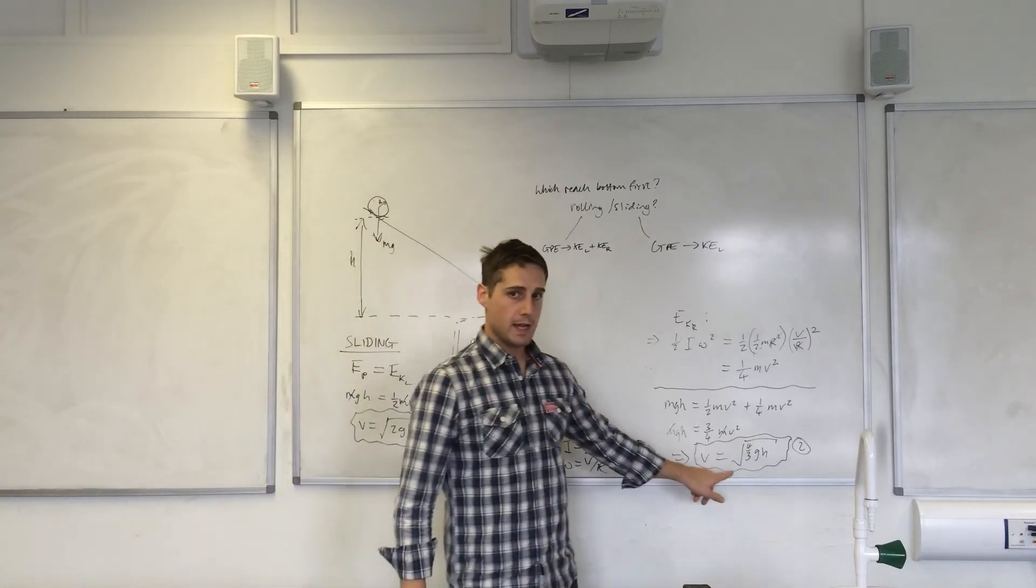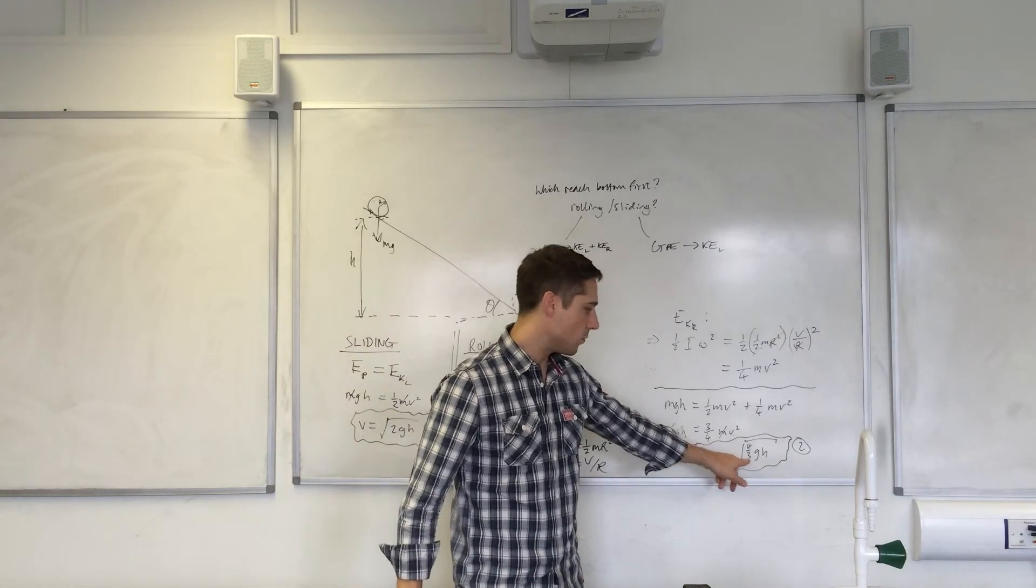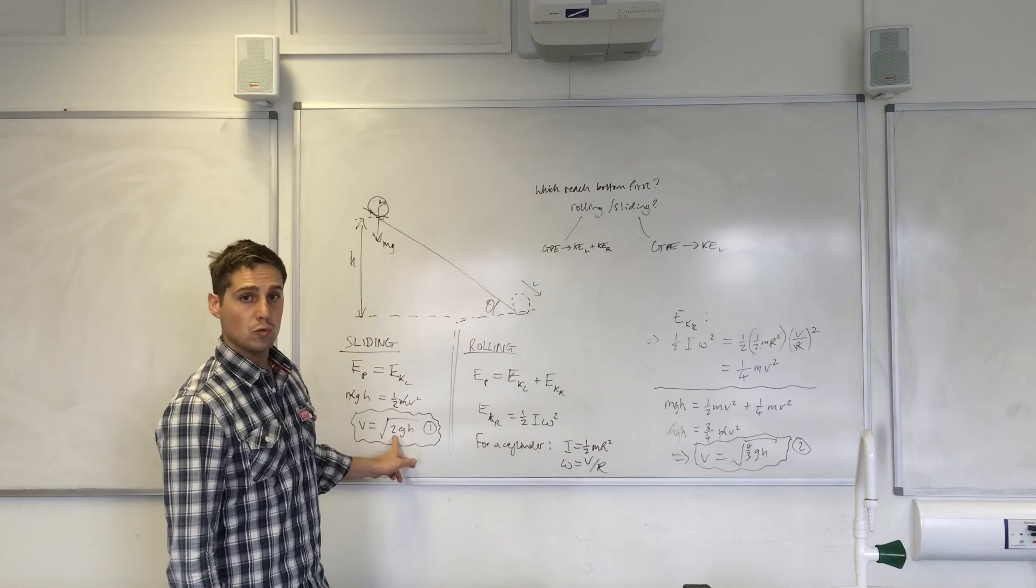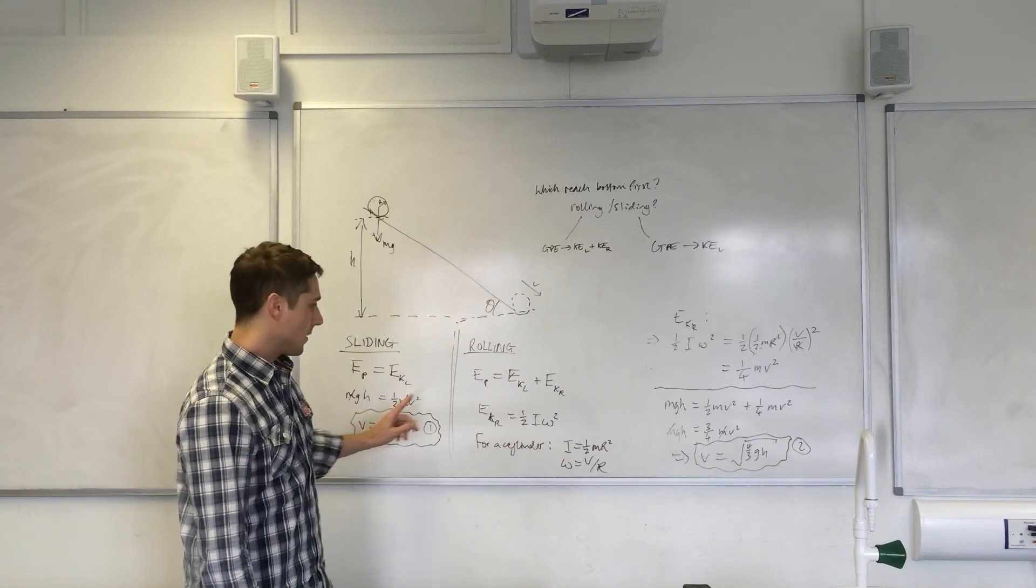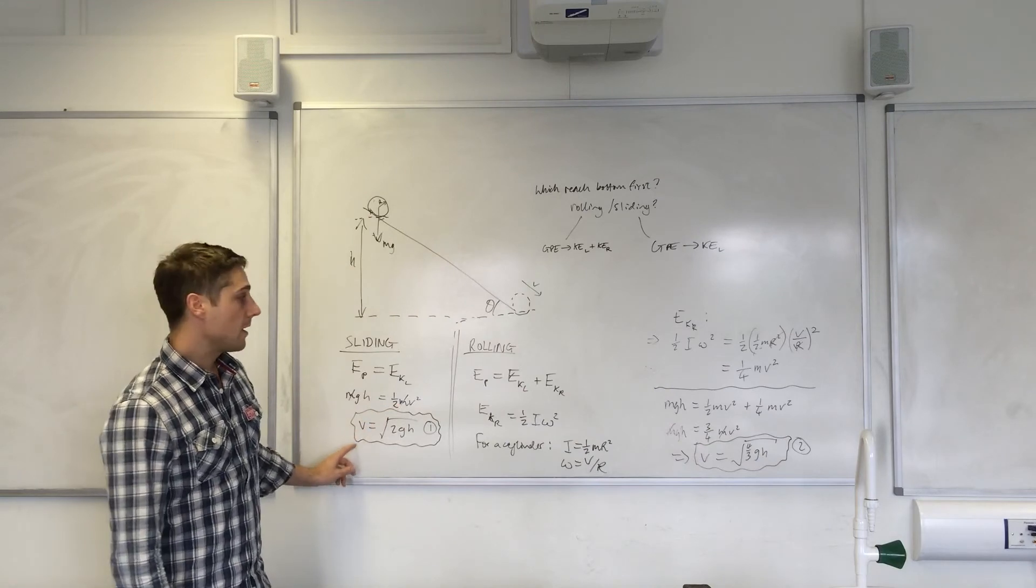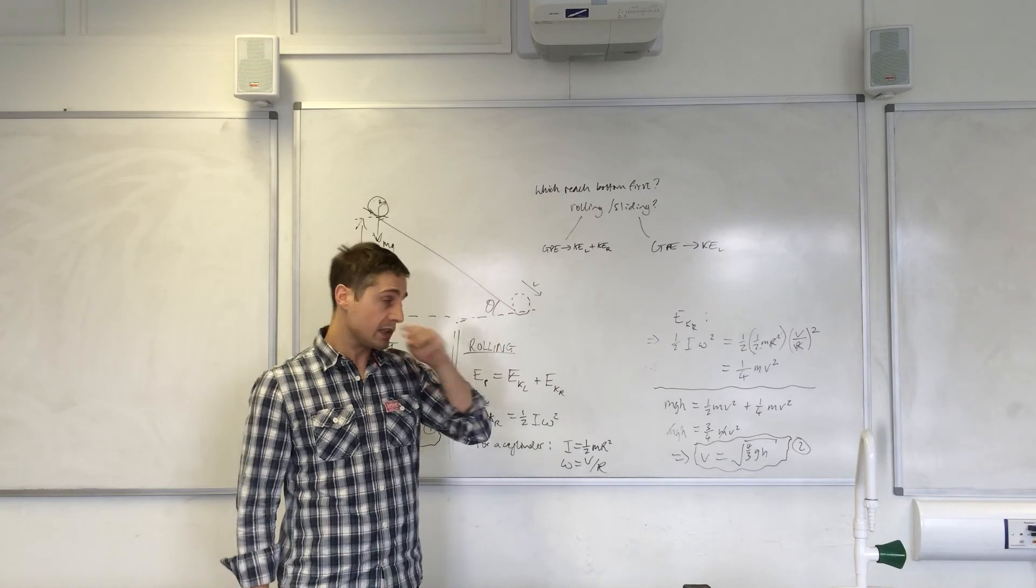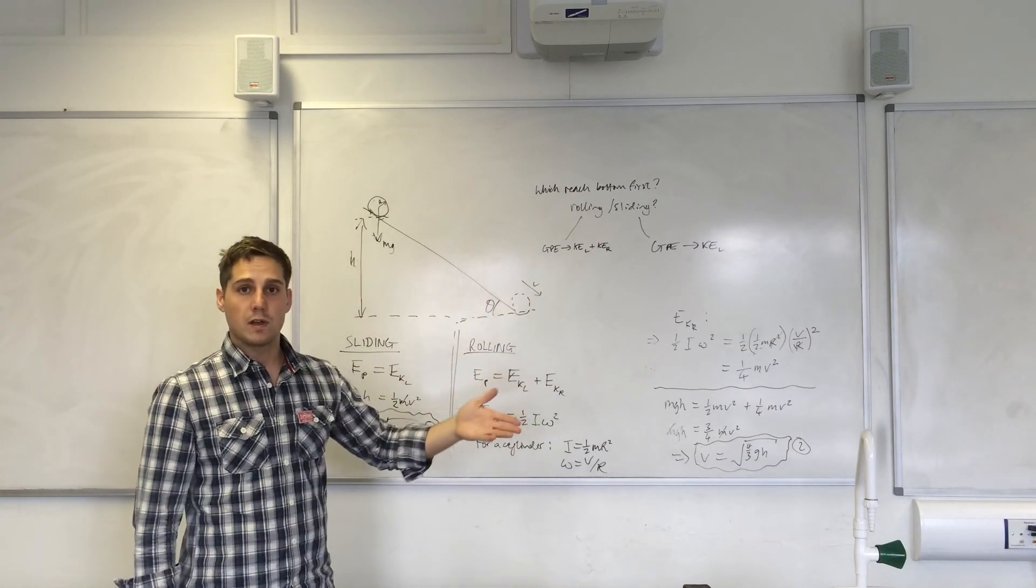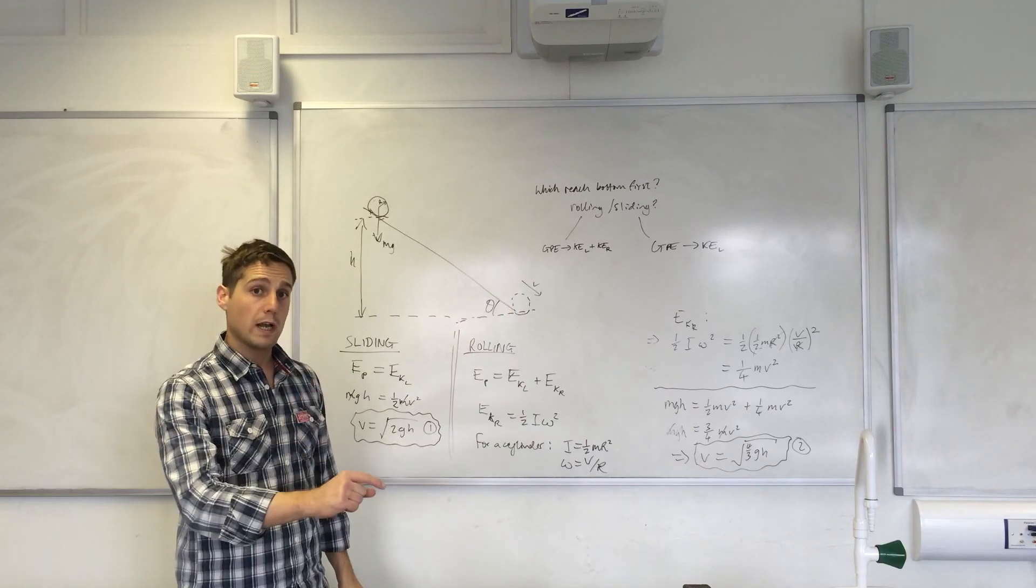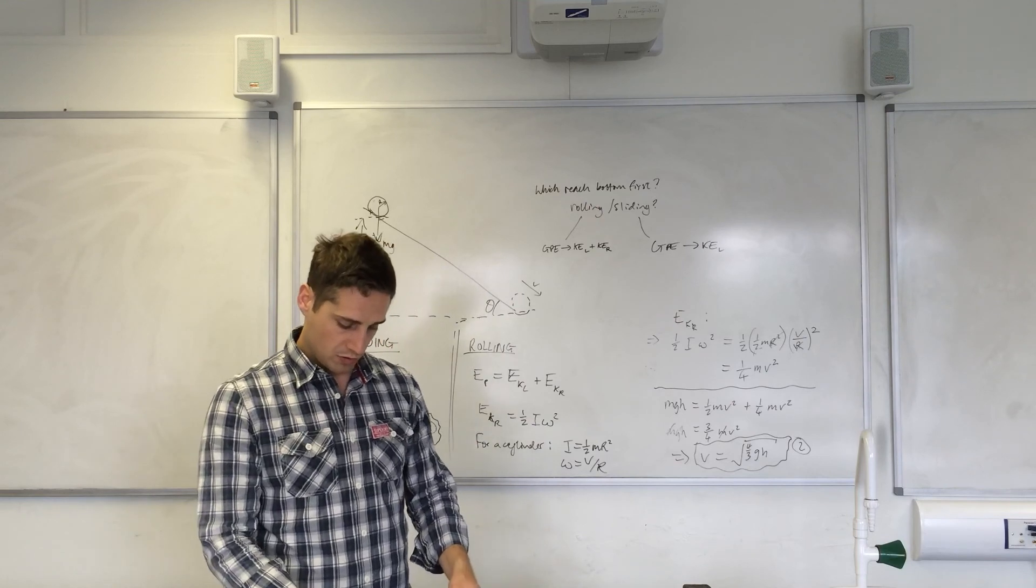Well, you can see that this term—one and a third—is less than this term, two. So therefore, this velocity is going to be less than this velocity here. And therefore, when it rolls, it will have a smaller velocity at the bottom, and conversely, if the maximum velocity is less, then it would have taken longer to roll down the slope than to slide down. And that is the solution to the problem.